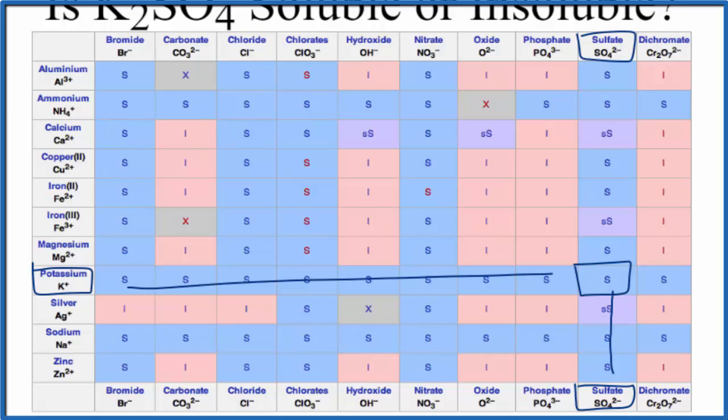It'll dissolve, break apart into its ions. We'll have K plus, we'll actually have two K plus potassium ions. We'll have SO4 two minus, and they'll be aqueous. They'll be dissolved in the water.